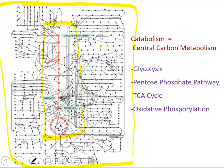There are smaller units, which we call pathways, that make central carbon metabolism. We will talk about glycolysis, the pentose phosphate pathway, the tricarboxylic acid cycle, and oxidative phosphorylation.